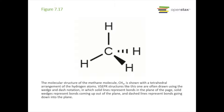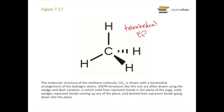Methane is an example where there are four regions of electron density, giving it a tetrahedral electron pair geometry. Because there are no lone pairs around the carbon, it also has a tetrahedral molecular structure. The wedge-dash notation shows this three-dimensional arrangement.